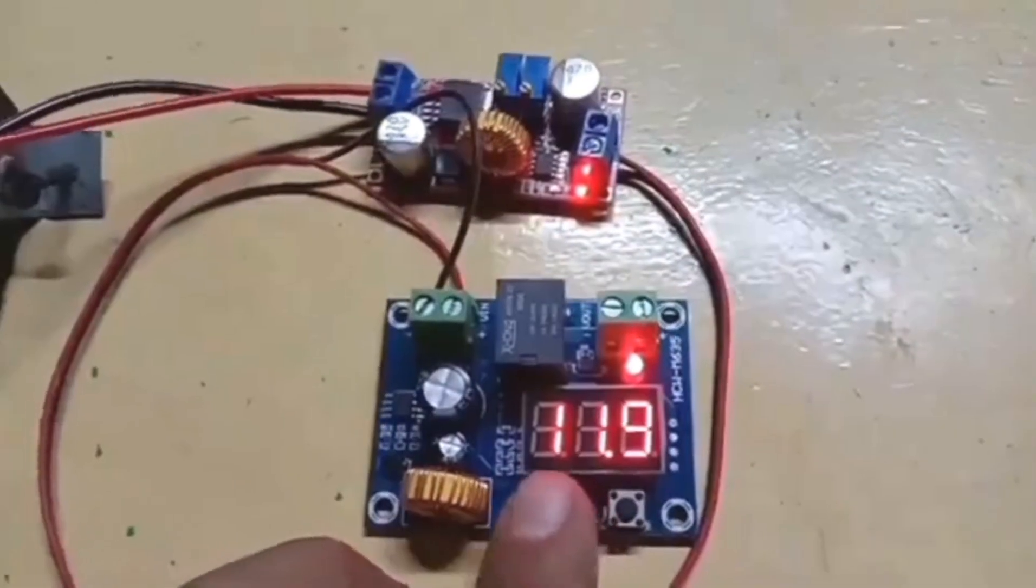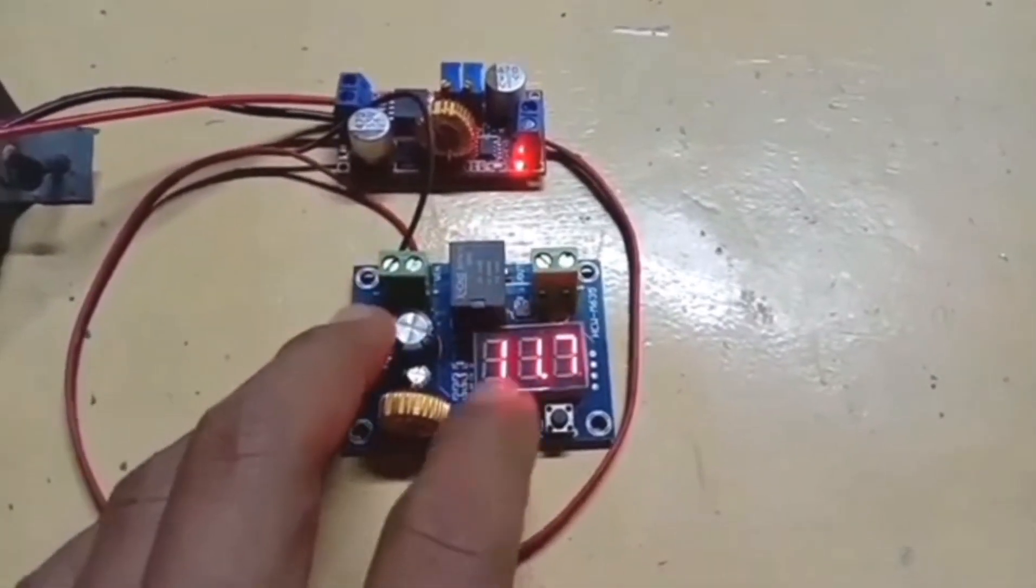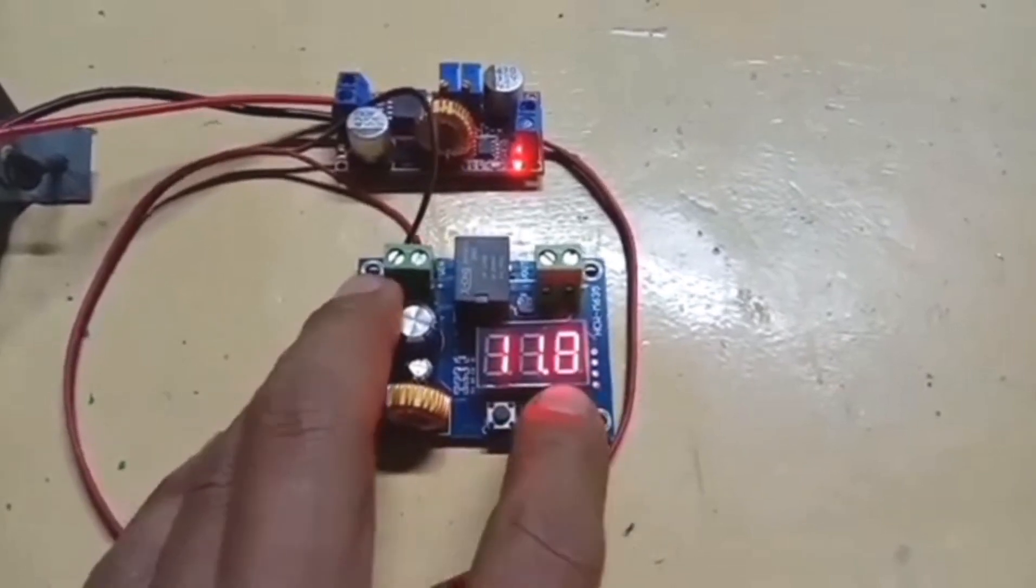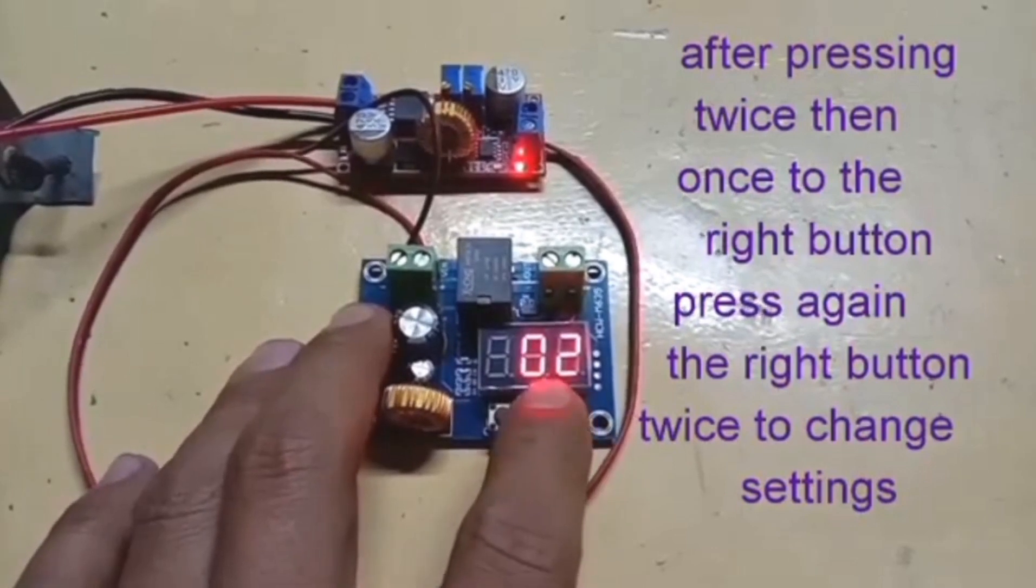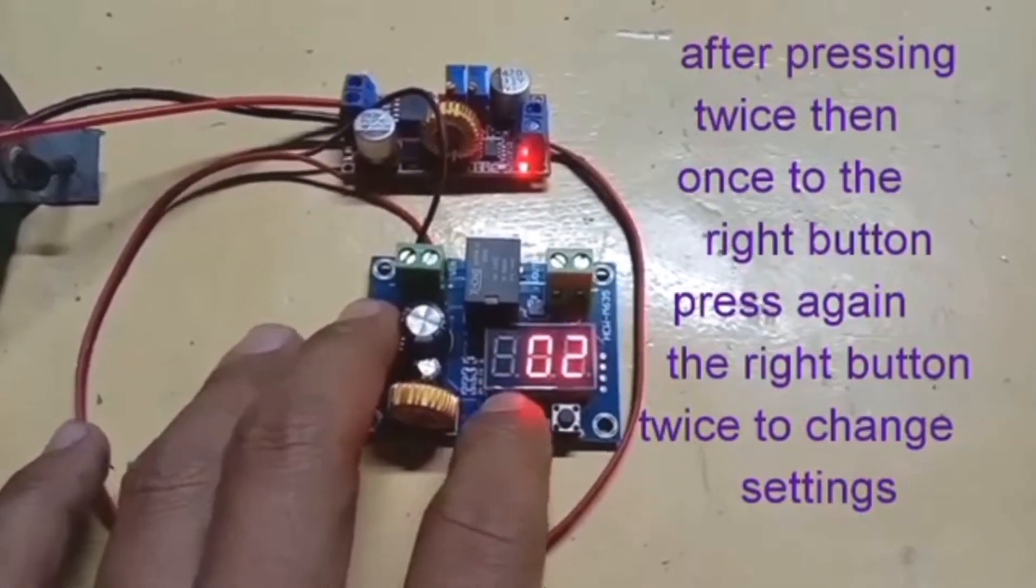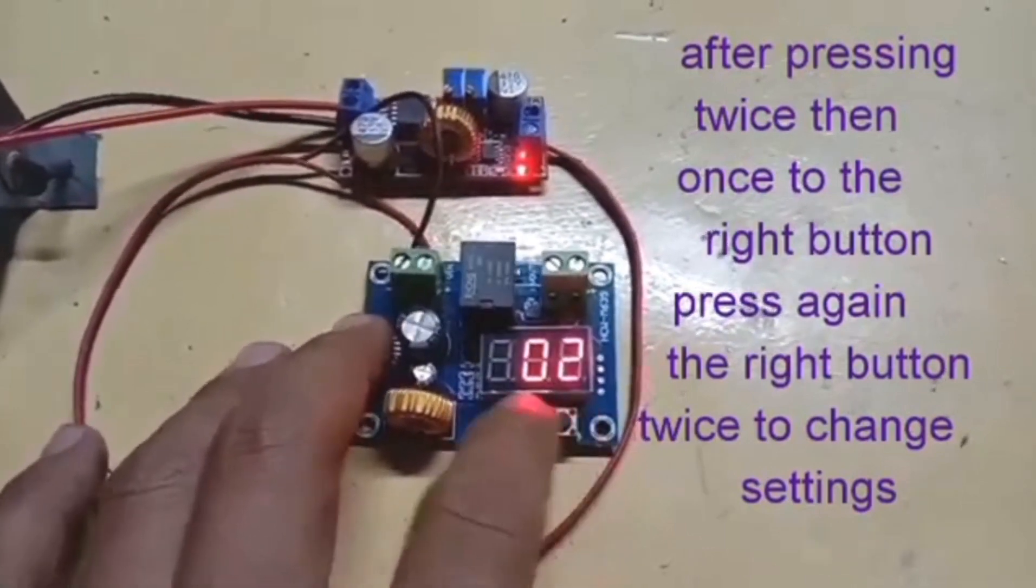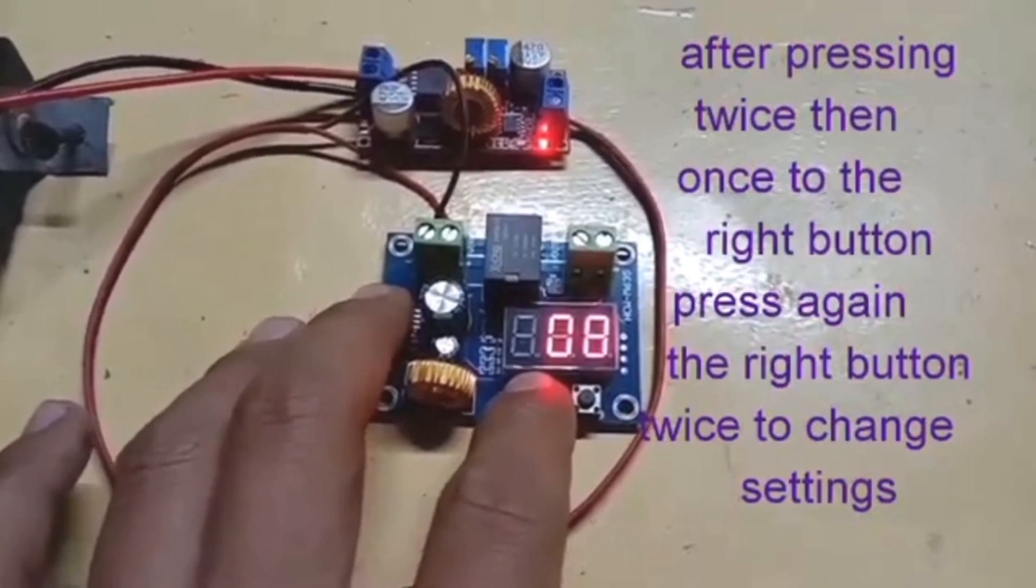This time I'll show you how to change the number for discharge mode. Press the left button twice and once to the right button. I'll change it with 2.0, meaning 2 volts will increase before the discharge mode.